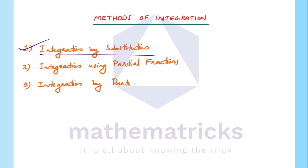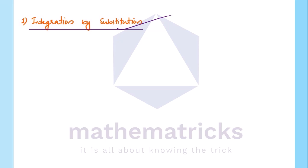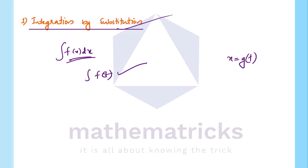In integration by substitution, we have to change the function f(x) dx. We can't apply the standard formula directly here. We have to replace the function x equals g(t), change the variable to t, and then integrate the function and convert it back.